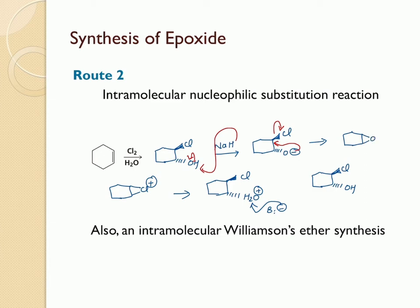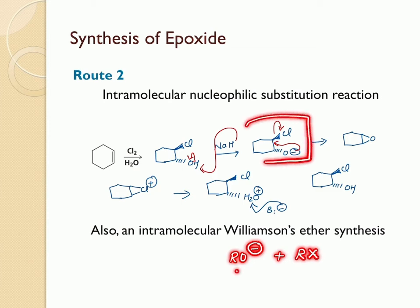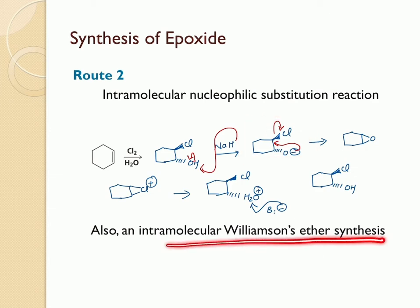This is also called intramolecular Williamson's ether synthesis, because in Williamson's ether synthesis we need to have an alkoxide and an alkyl halide. Since the alkyl halide and the alkoxide are present in exactly the same molecule, this is called intramolecular Williamson's ether synthesis.